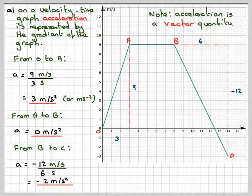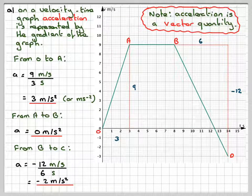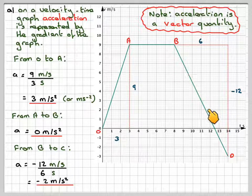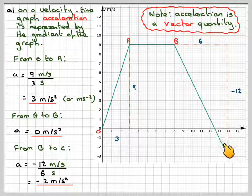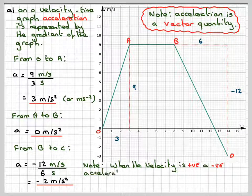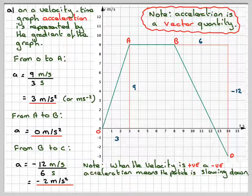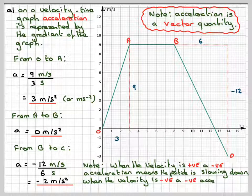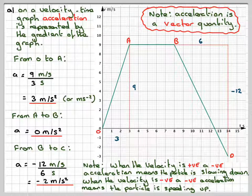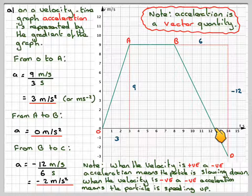The acceleration is a vector quantity, so it has magnitude and direction. From A to B and beyond, the acceleration is acting against the velocity, so the particle is slowing down. At t = 12.5 seconds, it changes direction. The acceleration is still negative and the velocity becomes negative too, so the particle is actually speeding up in the opposite direction. When velocity is positive and acceleration is negative, the particle slows down; when both are negative, the particle speeds up — it slows to zero and then moves in the opposite direction.